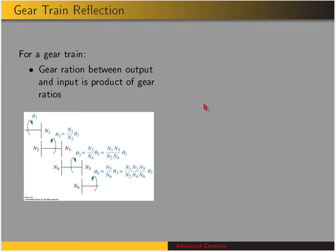Oftentimes we can't achieve the gear reduction we want through one pair of gears, so we need a gear train — several consecutive pairs of gears where the output shaft of one gear pair becomes the input shaft of the next. For three pairs, we step through: theta 2 equals N1 over N2 times theta 1. Then theta 3 equals N3 over N4 times theta 2. Substituting the expression for theta 2, the product of the two gear ratios gives the overall gear ratio from theta 1 to theta 3.